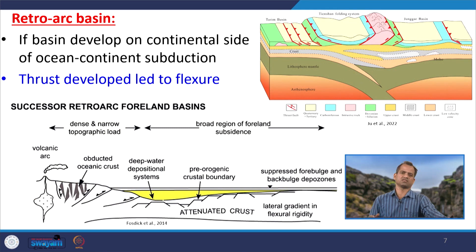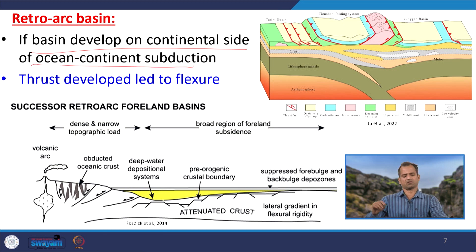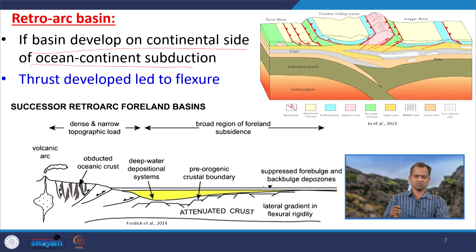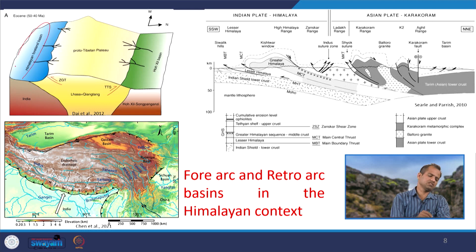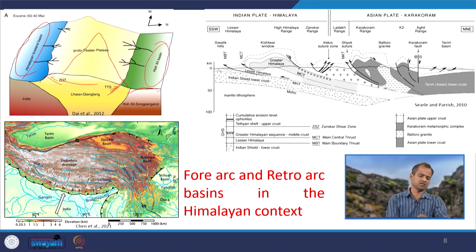Another type of basin is the retro-arc basin. Retro-arc means the back side of the arc — the frontal side has the fore-arc or foreland, and the back side has the retro-arc or back-arc basin. The basin develops on the continental side of ocean-continent subduction, and thrust development leads to a flexural system producing back-arc or retro-arc basins. In the Himalayan context, the Tarim basin is the retro-arc basin located behind the Himalayan range.